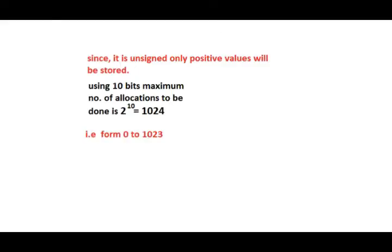Since it is an unsigned data type, we can hold only positive values. Now the data type is of 10 bits, so 2 to the power 10 is 1024. That is, 1024 unique values are obtained, and the range of values is from 0 to 1023.